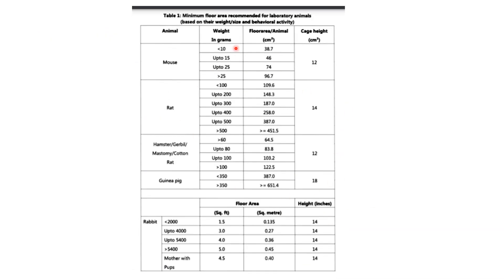This table indicates the minimum floor area recommended for laboratory animals based on weight, size, and behavioral activity. For example, for animals such as mouse, rat, hamster, and guinea pig, the floor area is given in centimeter square and the height of the cage in centimeters is also specified by the CPCA committee, based on different weight ranges in grams. Similarly, for rabbits, recommendations for floor area are given based on weight.